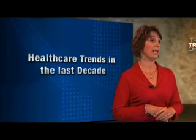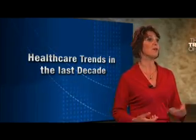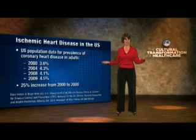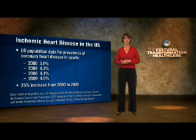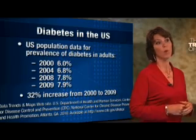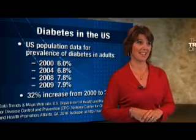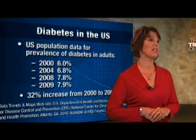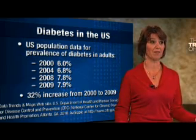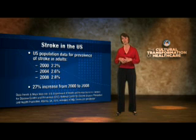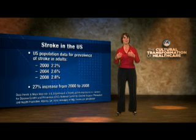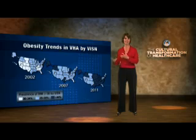So let's just take a moment and look at how we're doing in healthcare outcomes over the last 10 years in a couple of important areas. Heart disease — ischemic heart disease — as you can see, we've had a 25% increase in ischemic heart disease in this country in the last 10 years. What about diabetes? Diabetes, in the last 10 years, a 32% increase. So the system is not working. What about stroke? A 27% increase in incidence of stroke in this country in the last 10 years. Our current system isn't working. What about within the VA? Let's just look at obesity trends. And this data is from our National Center for Health Promotion and Disease Prevention.